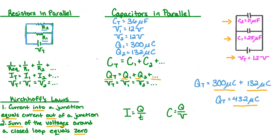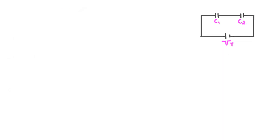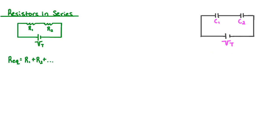Now that we know how to find total capacitance, total charge, and total potential difference for capacitors in parallel, let's move on and look at capacitors in series. Before we go over capacitors in series, let's first refresh our memory on resistors in series. The equivalent resistance is equal to the sum of the individual resistors, R1 plus R2, and so on for as many resistors as we have in series.